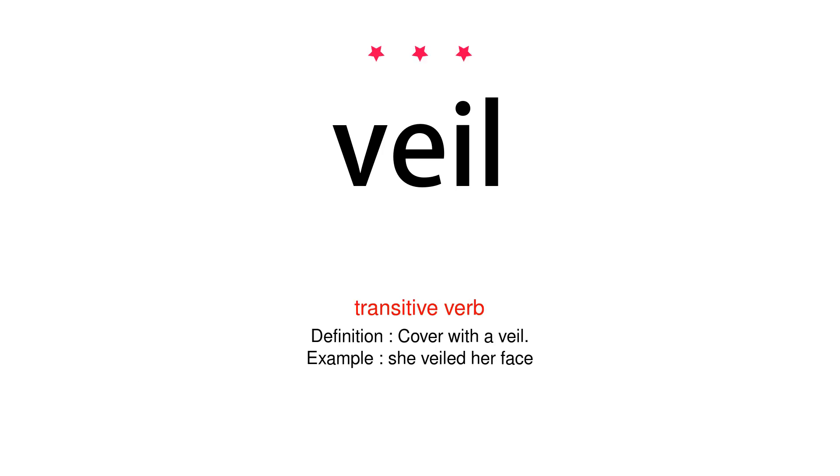Transitive Verb. Definition: Cover with a veil. Example: She veiled her face.